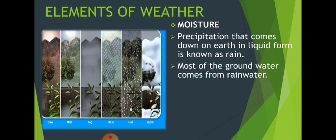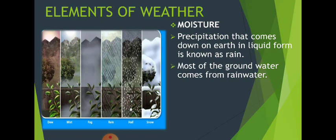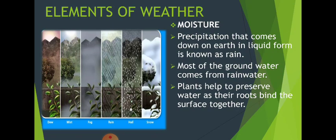Most of the groundwater comes from rainwater — our major source of fresh water comes from rain. Another important aspect is that plants help us a lot in preserving rainwater, because their roots hold the soil so that water is absorbed there and the top layer of soil does not erode. Plants and trees help us a lot in this.